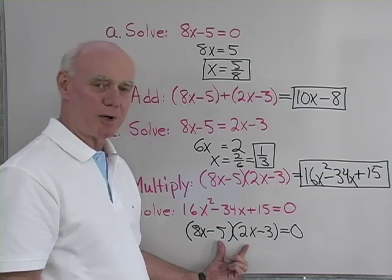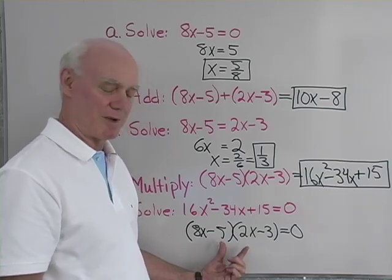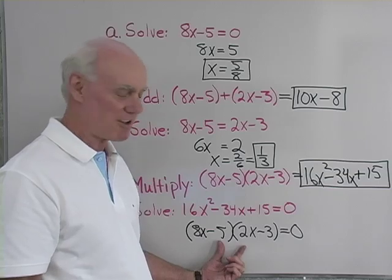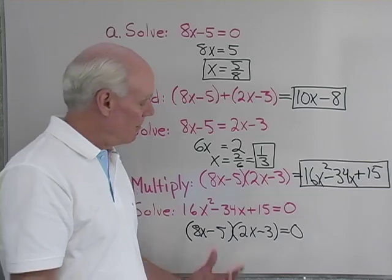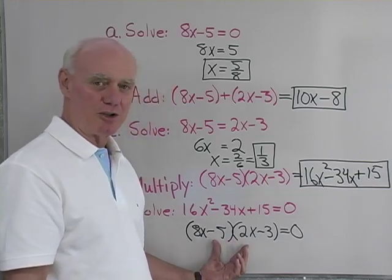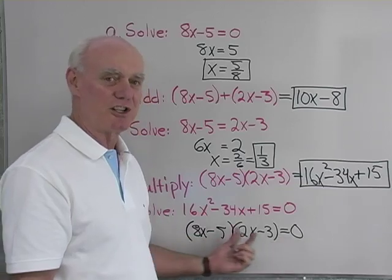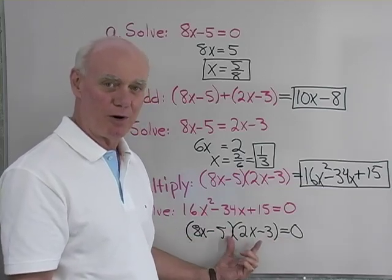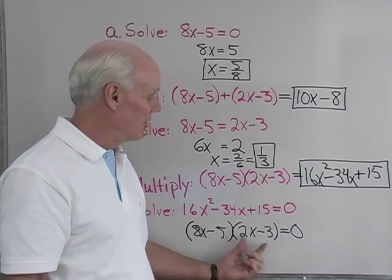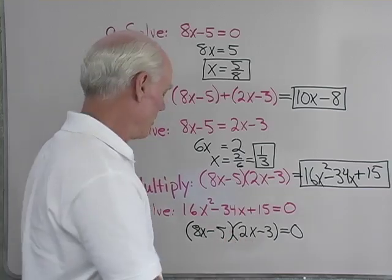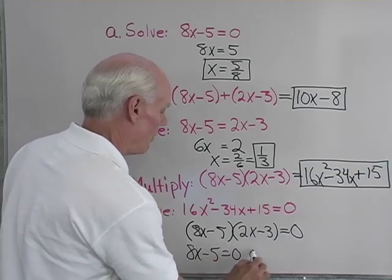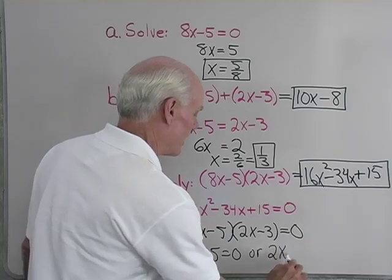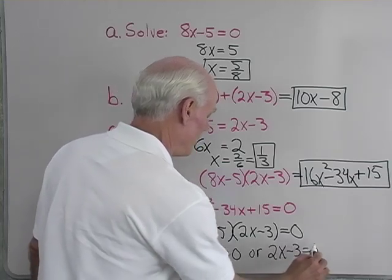So I'll use my results from part D here to write this as 8x minus 5 times 2x minus 3 equals 0. Now I'll use my zero factor property to set each of these factors equal to 0, because the only way I can multiply two expressions and get 0 is if one or the other or both are 0. In any of those cases I get a solution to my equation. So 8x minus 5 equals 0 or 2x minus 3 equals 0.